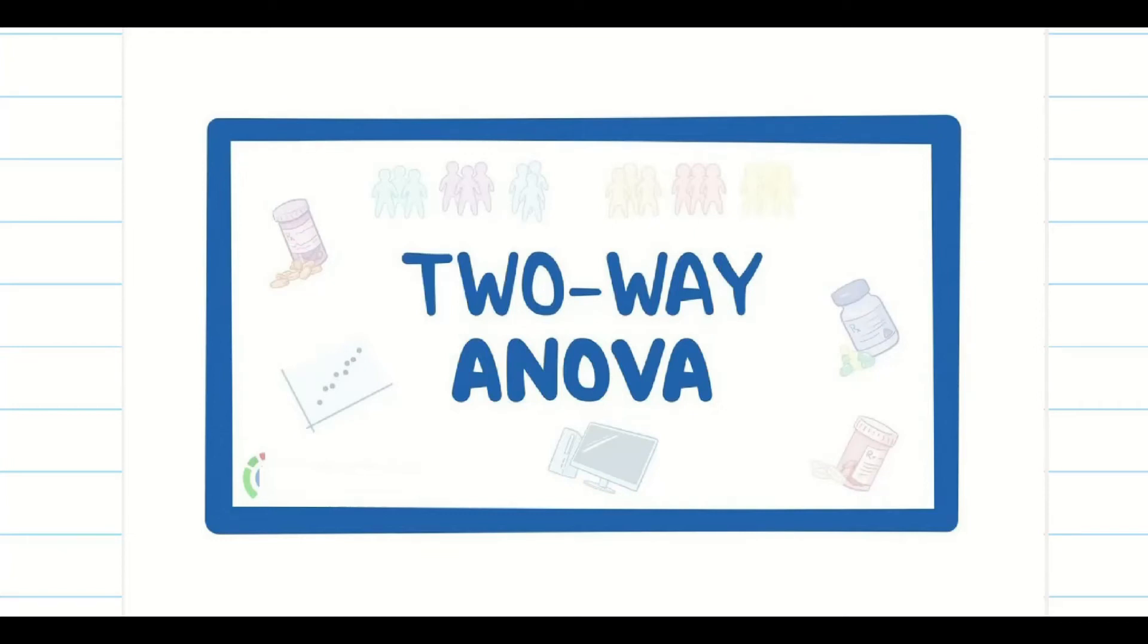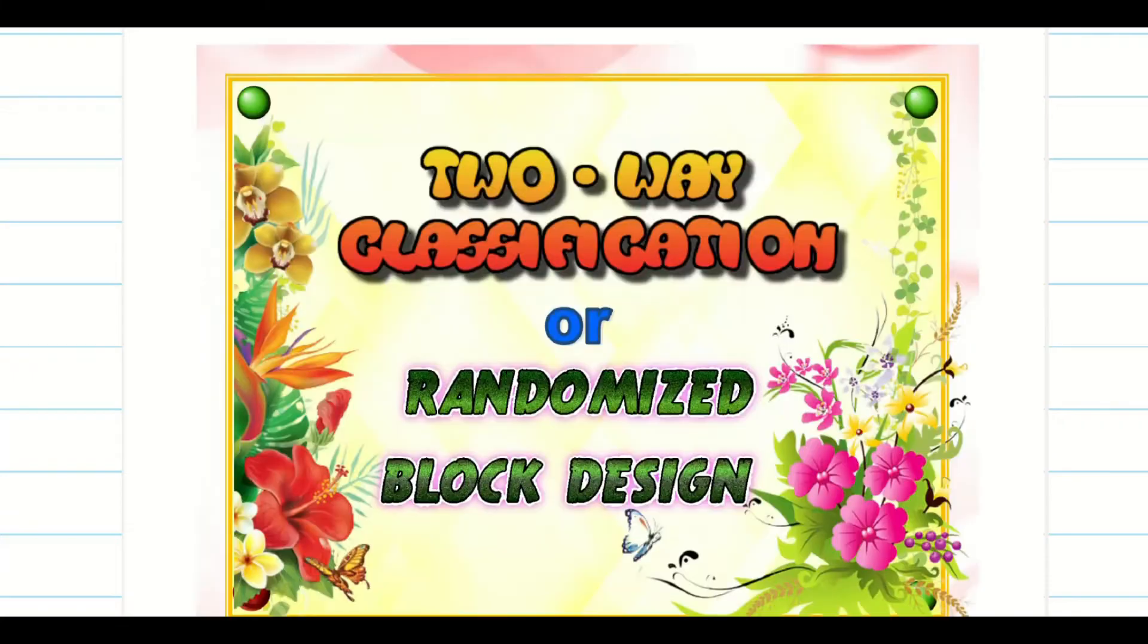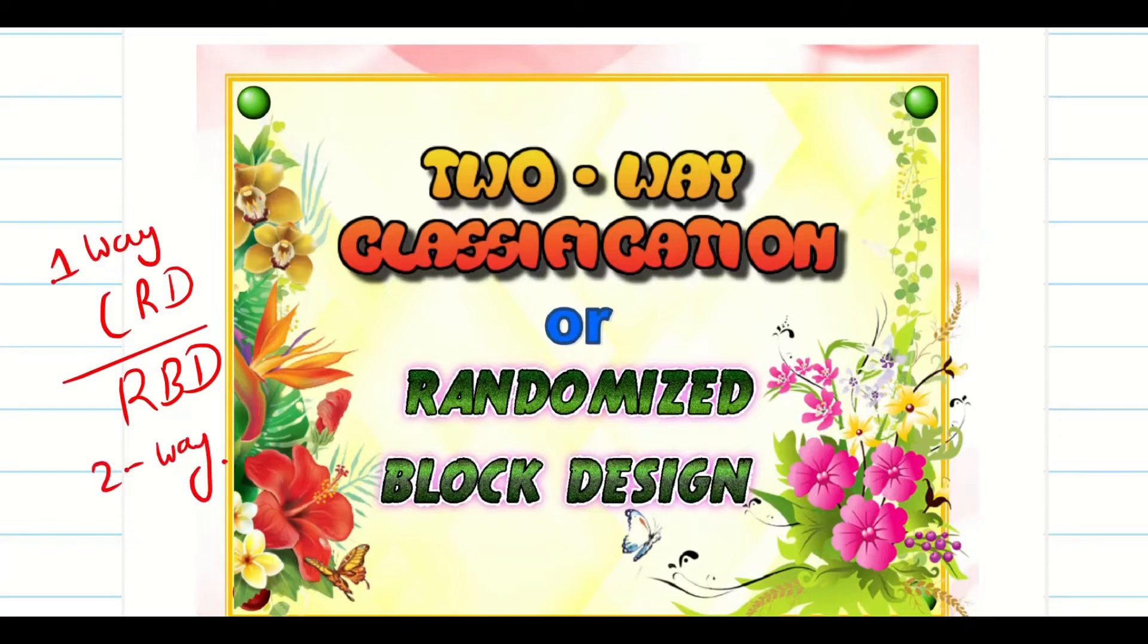Hello friends, in today's video we are going to solve problems on two-way ANOVA. Let us go into the problems. The other name of two-way ANOVA is randomized block design, you can remember RBD. For one-way ANOVA, completely randomized design CRD. This is one-way, and for two-way ANOVA we say it as randomized block design.